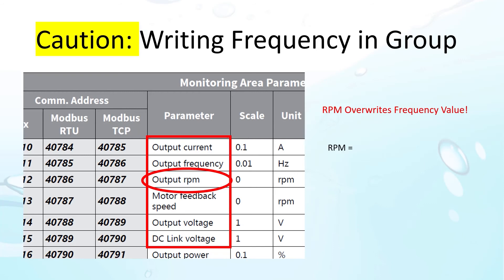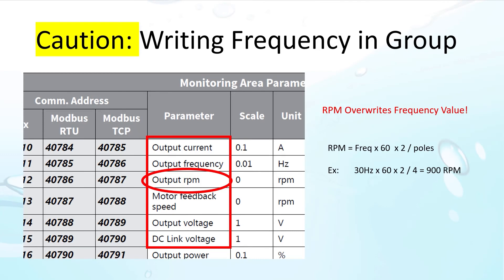As a reminder, to calculate RPM, just take the frequency, multiply by 60 to convert it to minutes, times 2 for the positive and negative pulses and divide by the number of poles. For example, 30 Hz on a 4 pole 1800 RPM motor is 900 RPM. Exactly what we expect.